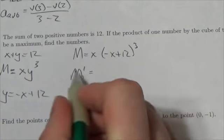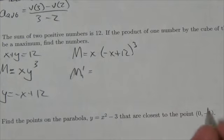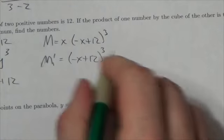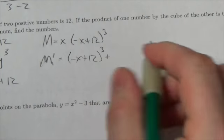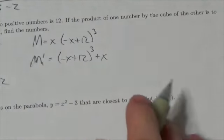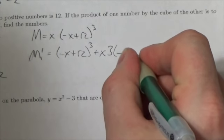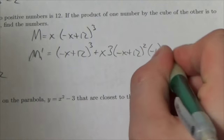So M prime is going to equal, well, the derivative of x is 1, so that'll be negative x plus 12 cubed. And then plus x times the derivative of that second factor there, which will be 3, negative x plus 12 squared times negative 1.